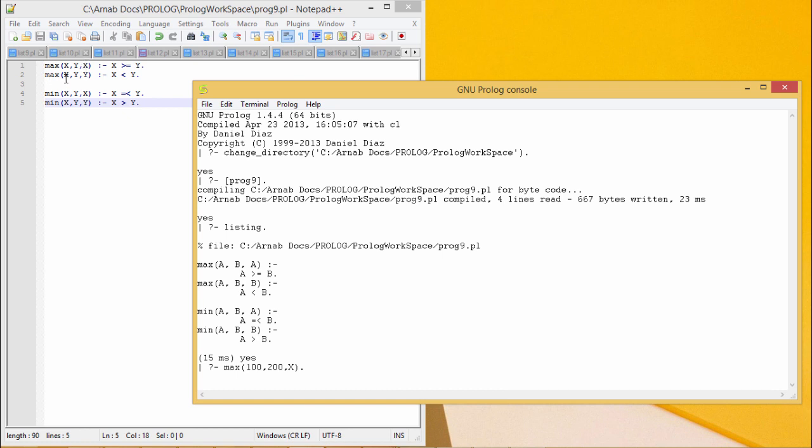In this case, max(X, Y) the output will be Y if X is less than Y. Similarly, for the min clauses, we have written min(X, Y) output will be X if X is less than equal to Y. Otherwise, min(X, Y) the output will be Y if X is greater than Y. Let us go for the testing.